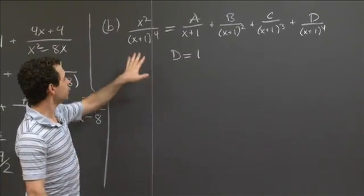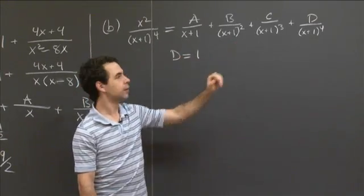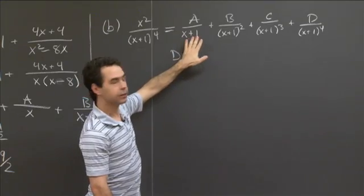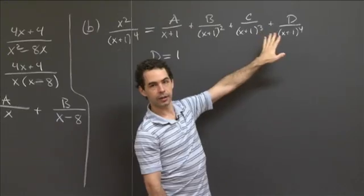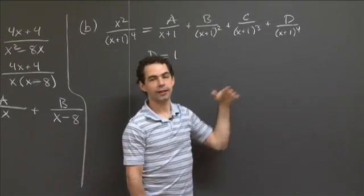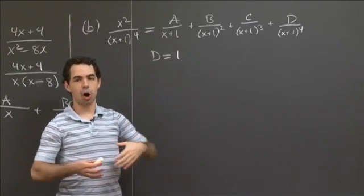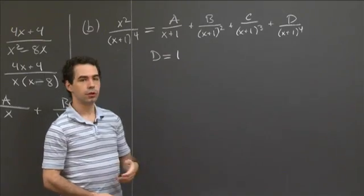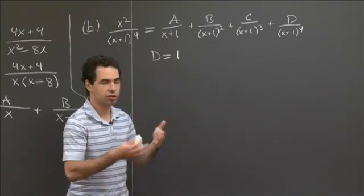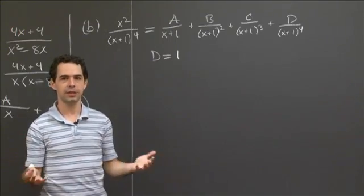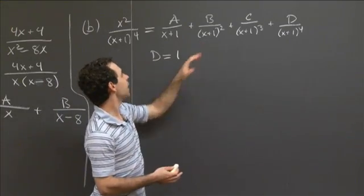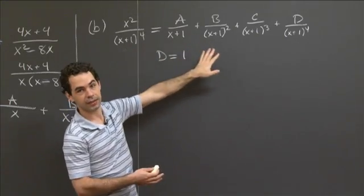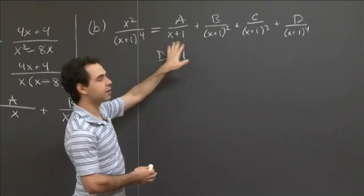Another approach is to multiply through by (x+1) to the fourth. On the left you'll have x squared, and on the right you'll have A times (x+1) cubed plus B times (x+1) squared plus C times (x+1) plus D. Since we know D equals 1, we write plus 1. For those two things to be equal as polynomials, all their coefficients must be equal, so you can set corresponding coefficients on the two sides equal to each other.